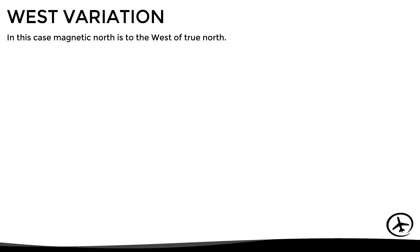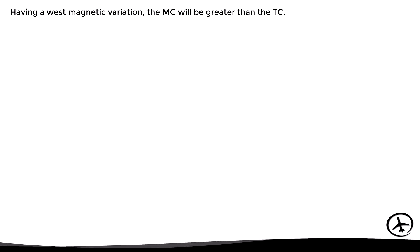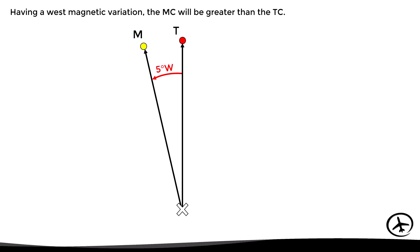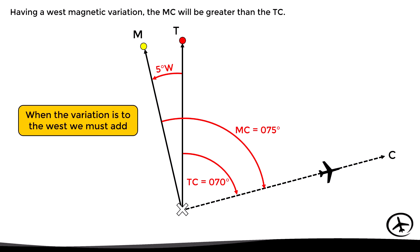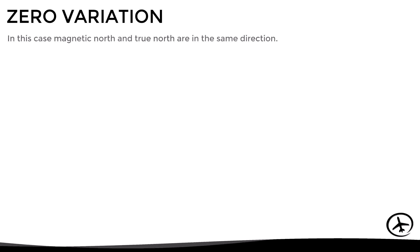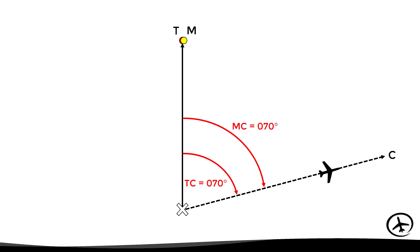When there is a west variation, magnetic north is to the west of true north, and the magnetic course will be greater than the true course. For example, with a west variation of 5 degrees and a true course of 70 degrees, the angle between magnetic north and the course will be 5 degrees greater — 75 degrees. When variation is west we must add: magnetic course equals true course plus the variation. When there is zero variation, both magnetic and true north are in the same direction, so the true course and magnetic course will be equal.